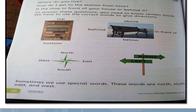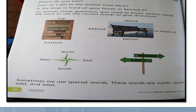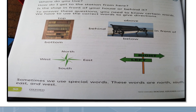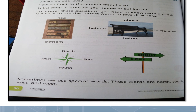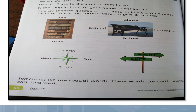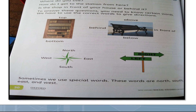Pakistan is located in Southern Asia. Pakistan is bordered by the Arabian Sea to the South, Iran and Afghanistan to the West, India to the East, and China to the North.